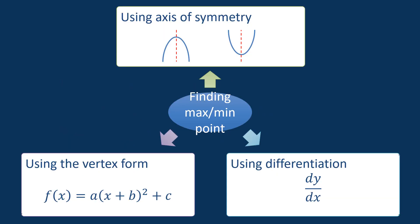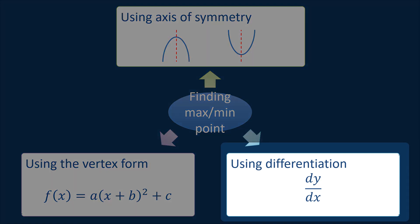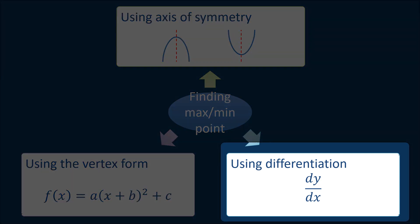In a previous video, we discussed finding the maximum or minimum point of a quadratic function by using the vertex form, and also using the Casio FX570EX calculator to verify our answer. In this video, I will cover using differentiation combined with the table mode in the Casio FX570EX calculator to determine the maximum or minimum point of a quadratic function.